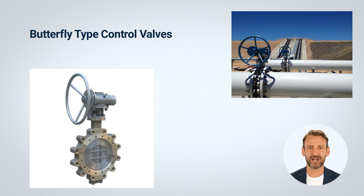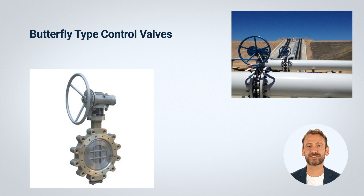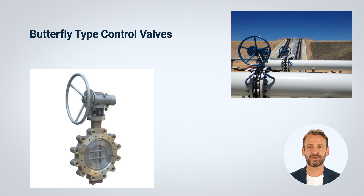Pros and cons: advantages of butterfly valves include ease of operation, low cost, and suitability for large-diameter piping systems. They require less space and weigh less than other valve types, making them easier to install and maintain. However, butterfly valves can suffer from poor throttling characteristics and have a limited temperature and pressure range. They may not be suitable for certain fluids or high-pressure applications. Overall, butterfly valves offer a cost-effective and efficient solution for many flow control applications, particularly in large-diameter piping systems.